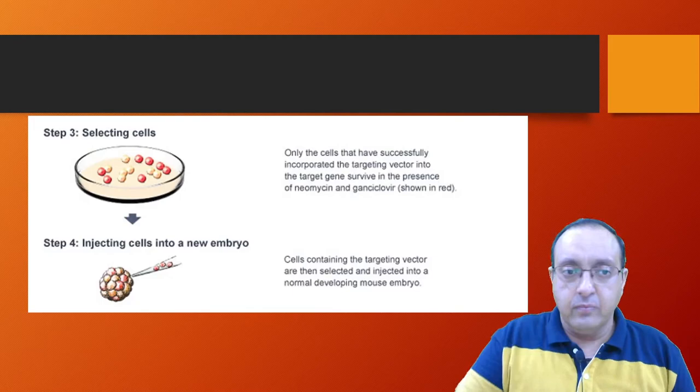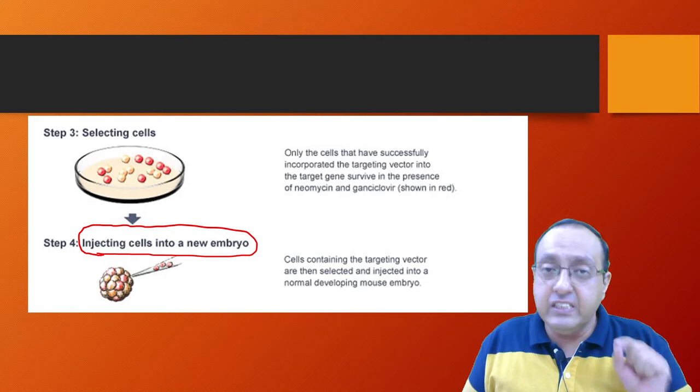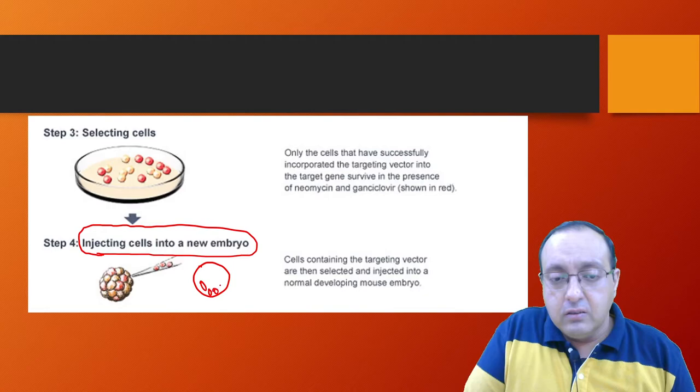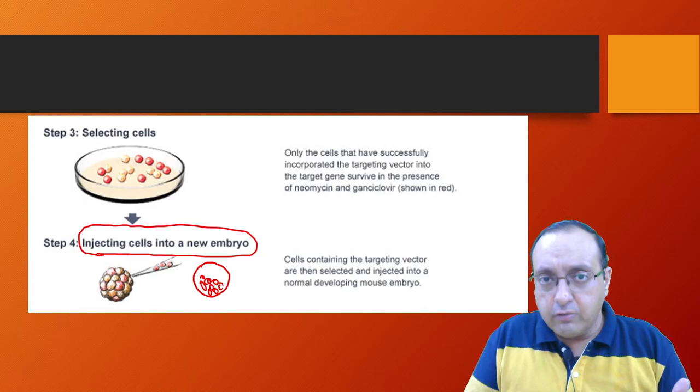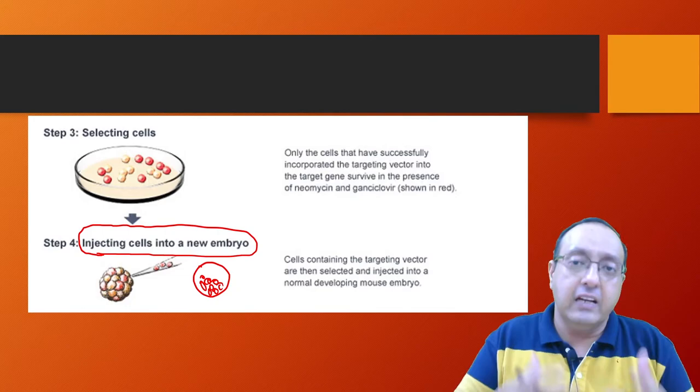And now what will happen is we will inject these cells into a new embryo. So we will harvest embryos from a mouse and we will inject it into the blastocyst. So blastocyst, as you know, is the developing embryo. It has specific cells which constitute the trophectoderm, which is the nourishing part of the embryo, as well as the inner cell mass which forms the embryo proper. So these cells will be incorporated into the inner cell mass, and this will give rise to a chimeric mouse.